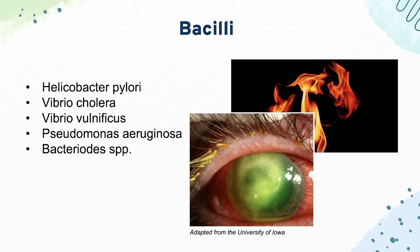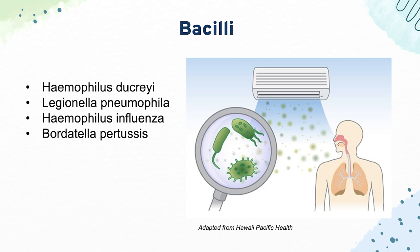Finally, we have Bacteroides species, which live in the gut — they're typically anaerobes and can cause infections in that area. Next, we have Haemophilus ducreyi, which causes painful genital chancres. They like to ask you to pick an organism based on whether the ulcer is painful or not, so know all the different types of genital ulcers and how to distinguish them.